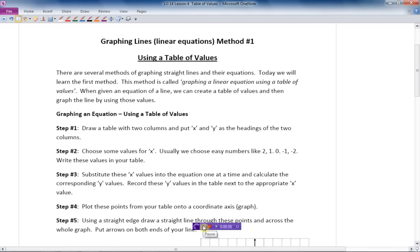There are three ways of graphing linear equations. Today we are going to talk about the first method. The method is called graphing a linear equation using a table of values. When you are given an equation of a line, we can create a table of values and then use these values to graph the line on a grid.